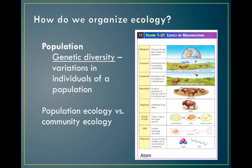Individuals make up a population, and a population is a subset of a species that lives in a particular area that may or may not have contact with other populations. Populations of different species that live in the same area form a community. Population ecology is how individuals of the same species in one group interact with each other, while community ecology is how different populations interact — for example, predator-prey relationships. An ecosystem is the community plus abiotic factors like light and water, plus organism interactions. Ecosystem ecology studies patterns of energy or nutrient flow, like the carbon cycle and the nitrogen cycle.